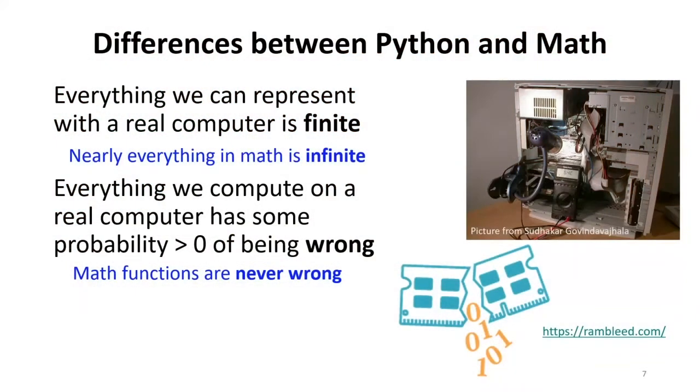Math doesn't have to worry about things like that. We know what addition means in math. It's always correct. It might be miscomputed by a human doing it or a computer doing it. But mathematical addition is perfect. It's defined and it always means the same thing. And it's always correct.